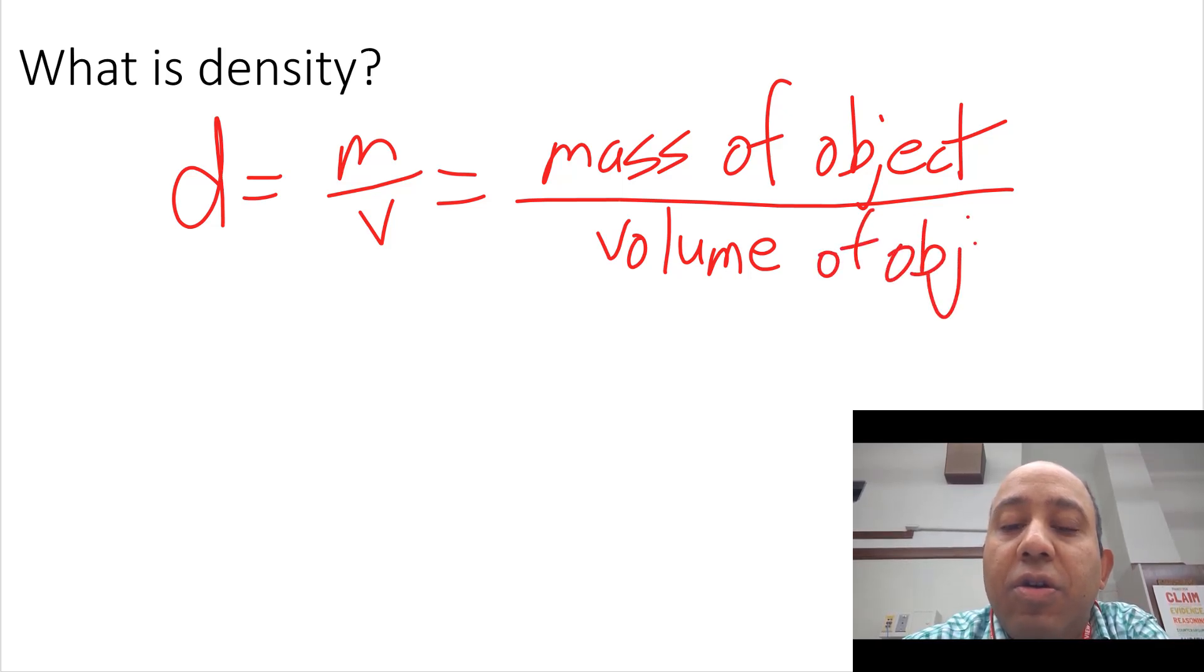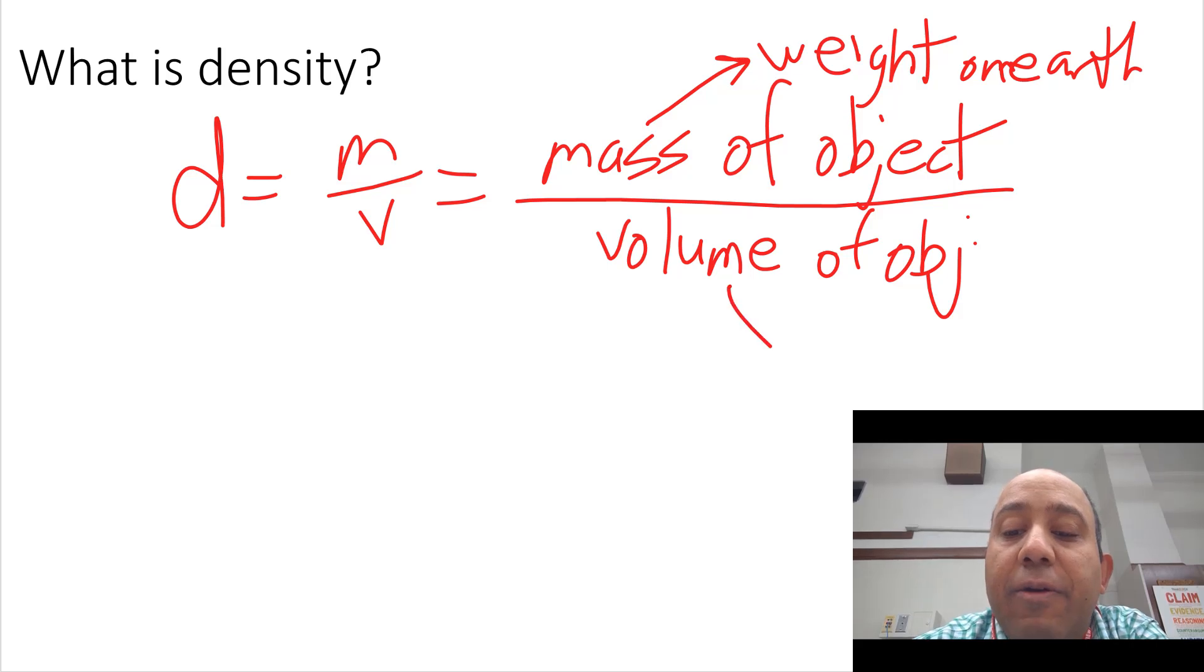You should also know what mass is and what volume is. Mass is the same as the weight on Earth. Mass is determined by the number of atoms in an object. We'll talk about that later. Volume is the three-dimensional space, the amount of three-dimensional space that an object takes up.